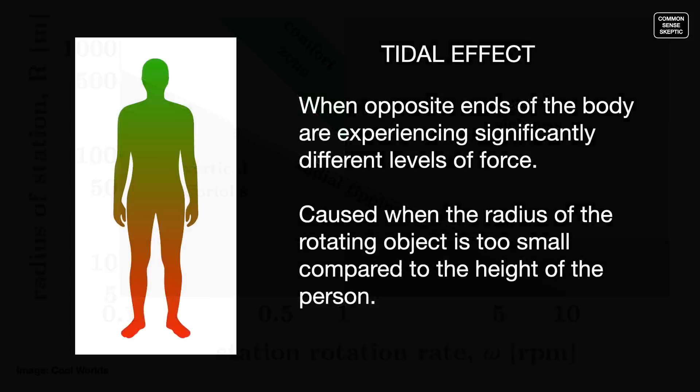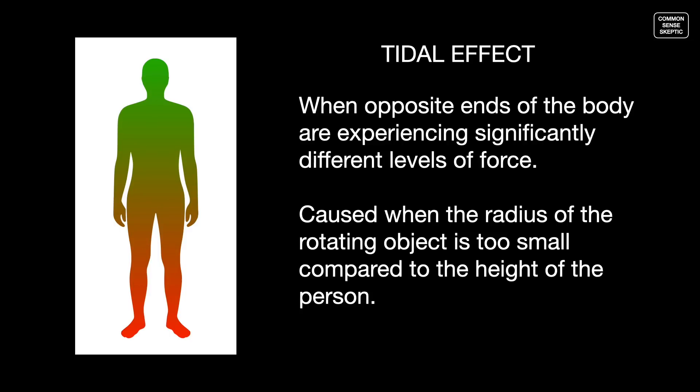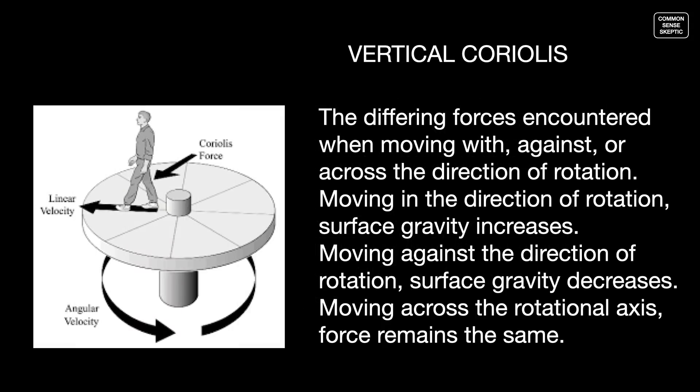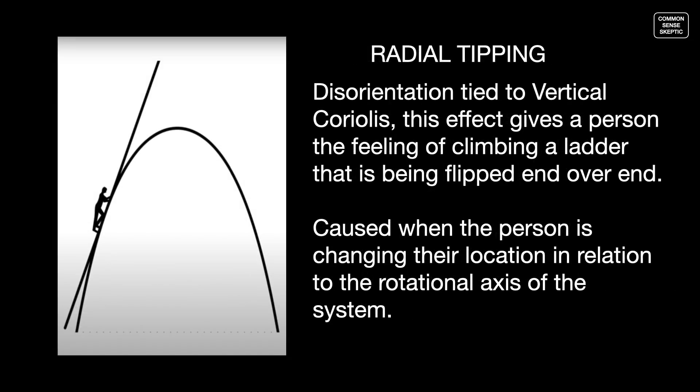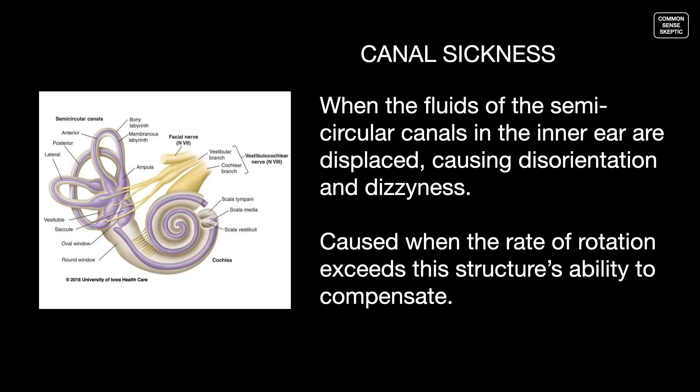Those forces are: Tidal effects, which are a significantly different gravity affecting opposite ends of the body, caused when the radius of the rotating structure is too small compared to the height of the person. The Coriolis effect, which is a pattern of deflection taken by objects not firmly connected to the ground or floor, caused by moving along the floor with, against, or sideways to the rotation. Tipping effects, likened to climbing up a ladder while it is being flipped end over end, caused when a person moves closer to the rotational center. And canal sickness, which is variances in your inner ear semicircular canals that causes dizziness, nausea, and even blackouts, caused when the rate of rotation exceeds the inner ear's ability to cope.